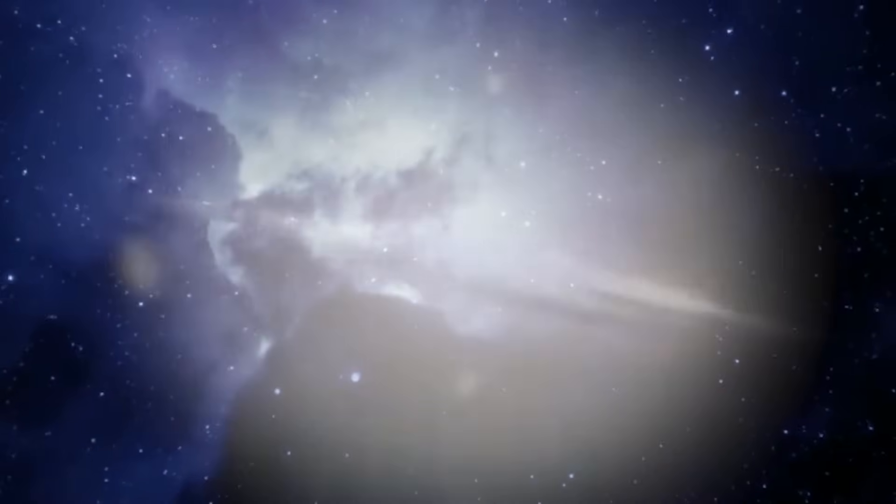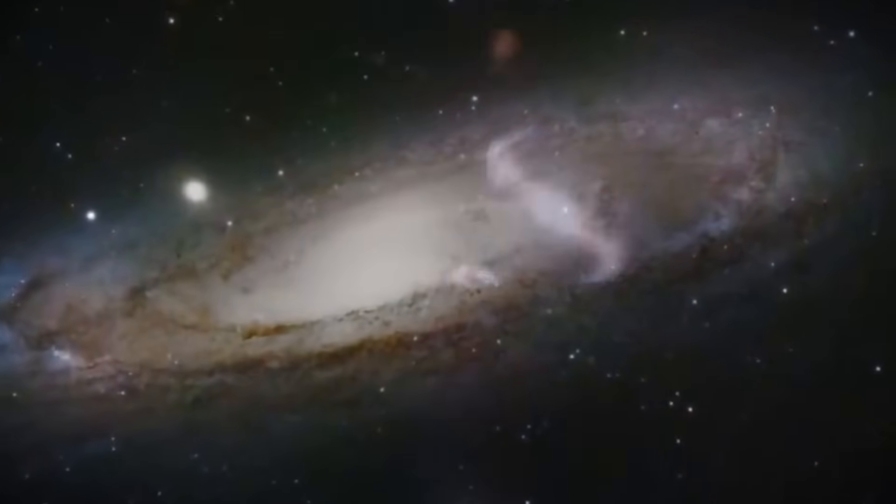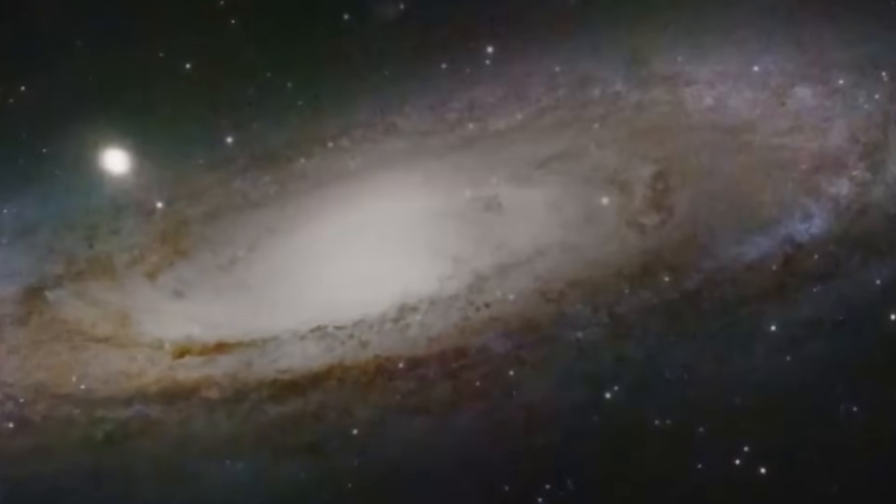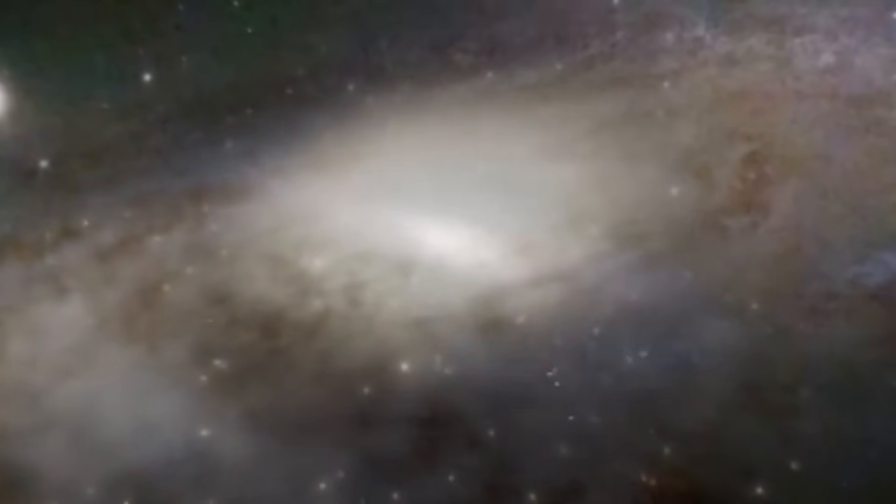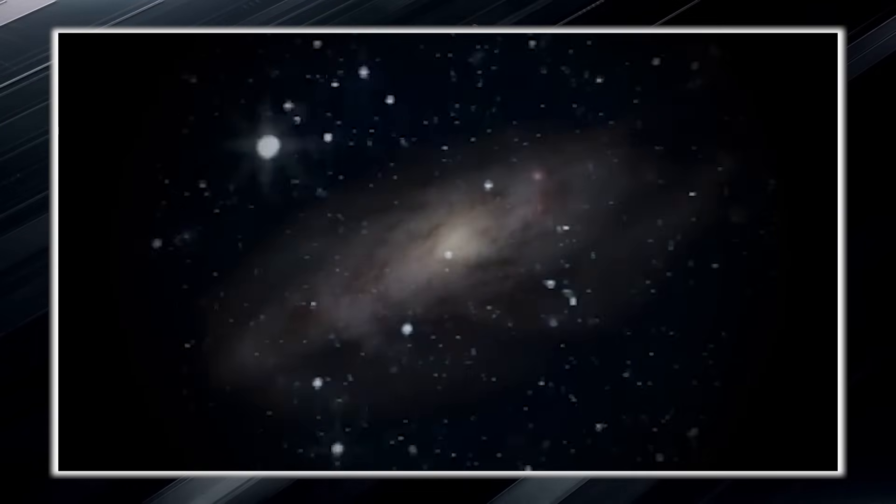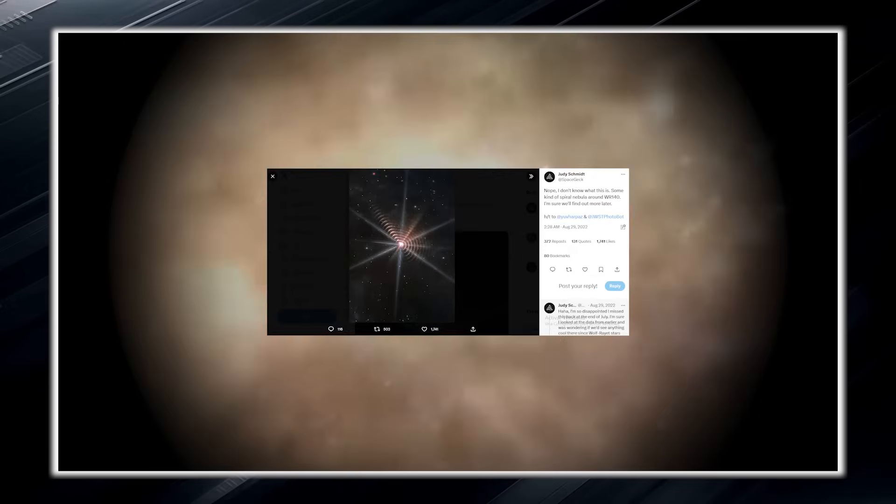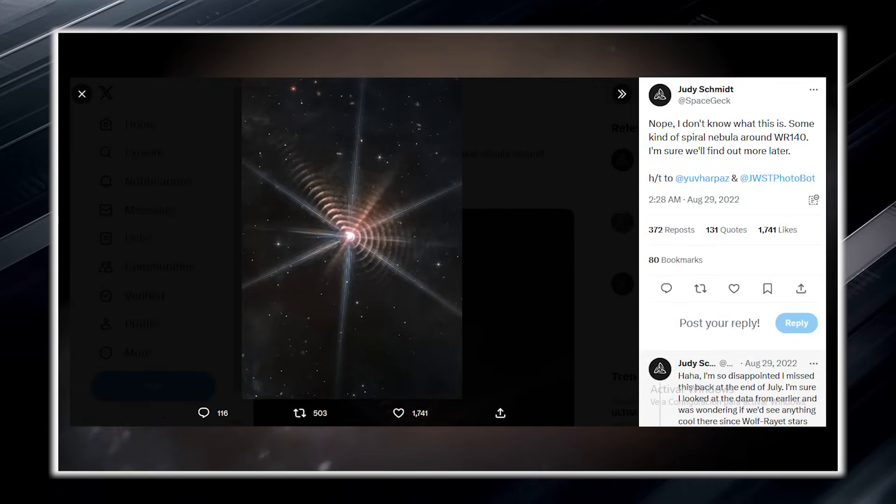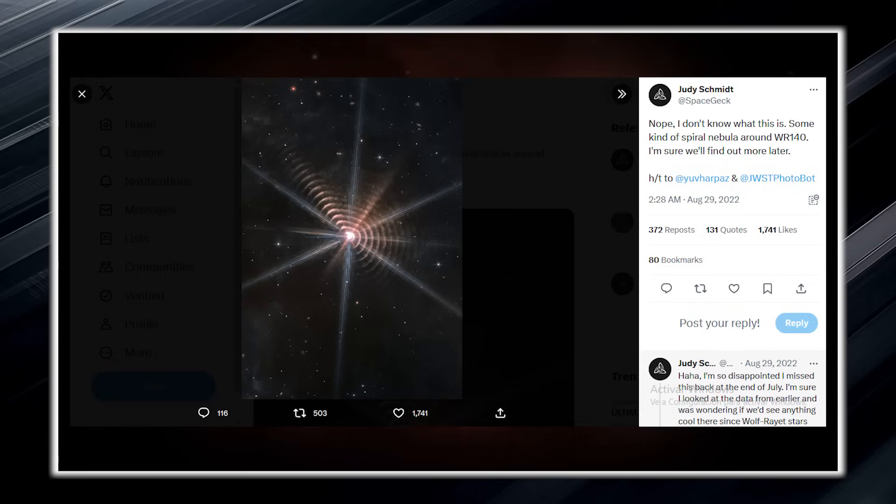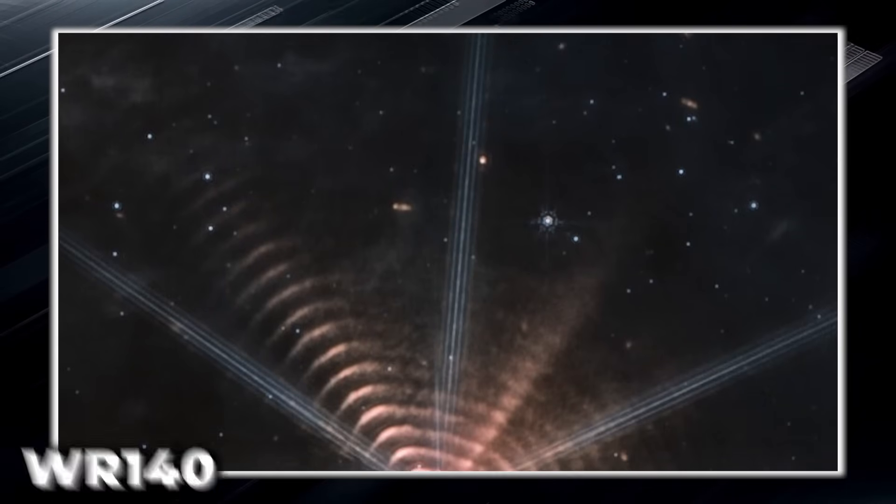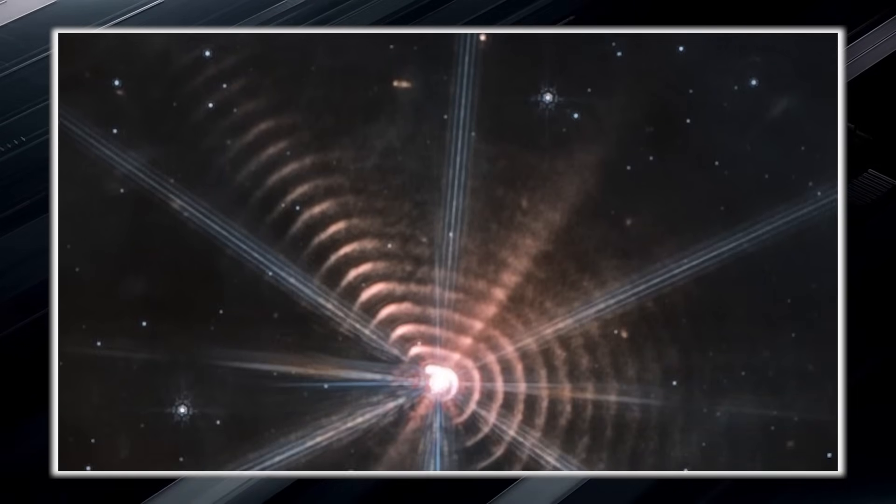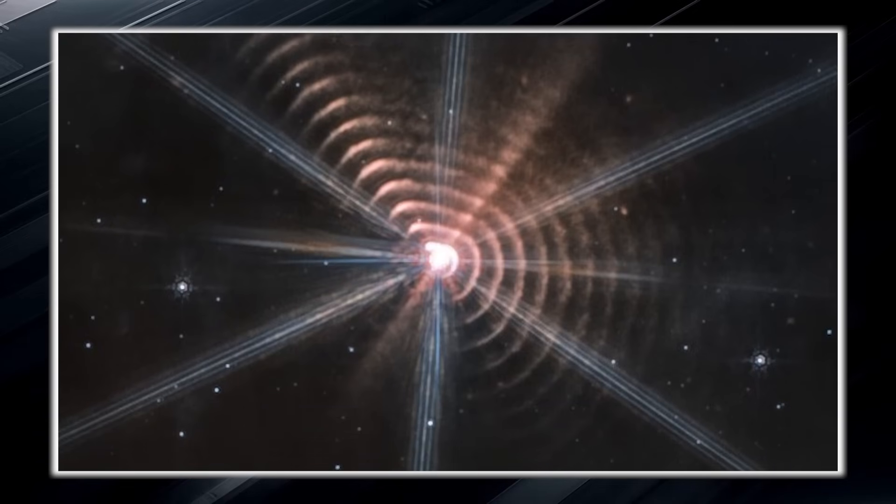In addition to fascinating discoveries that excite scientists and astronomers, the James Webb Telescope has captured strange space phenomena that even scientists cannot fully explain. One such enigma is the mysterious concentric rings found around a distant star, which have yet to be fully understood by astronomers. The image was posted on Twitter by a citizen scientist, which generated a torrent of comments and debate among the user community. The image showed that a star called WR 140 surrounded by regular wave-like circles that gradually faded away.